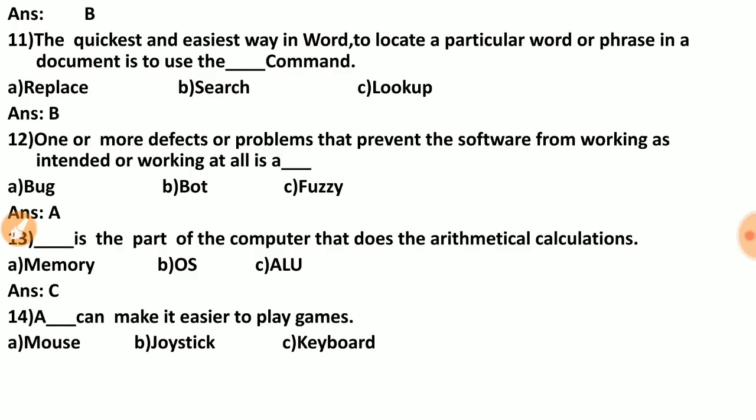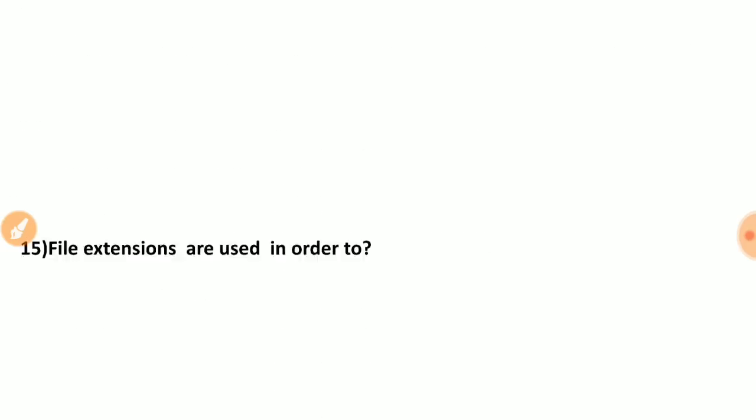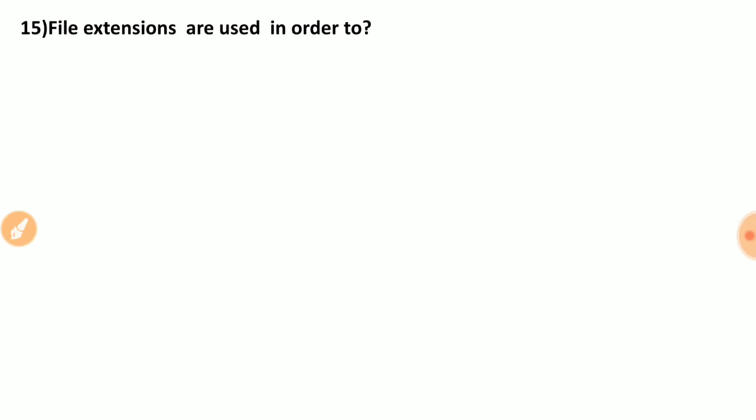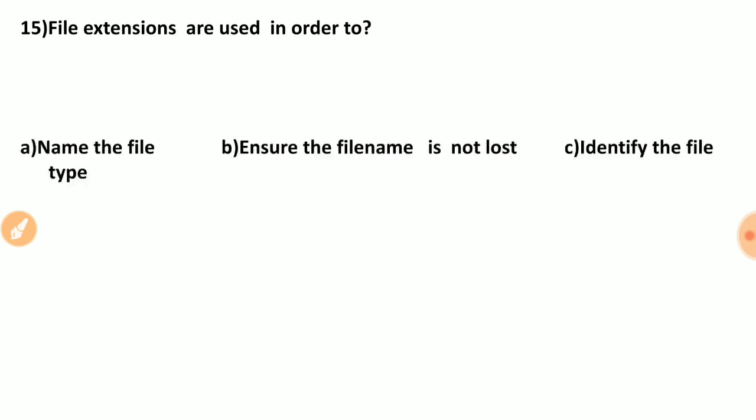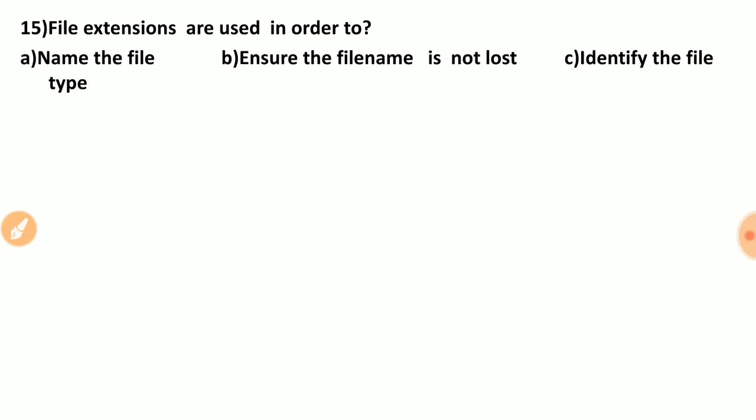Question fourteen: a dash can make it easier to play games. Options are: mouse, joystick, keyboard. The correct answer is joystick, as it makes gaming easier.